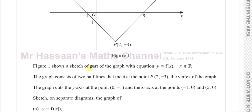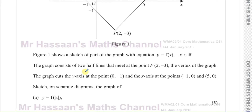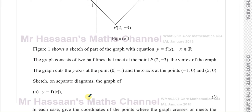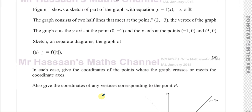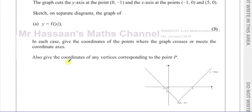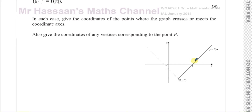Sketch on separate diagrams the graph of, first of all, y equals f of the modulus of x — here the modulus is inside the function. In each case, give the coordinates of the points where the graph crosses or meets the coordinate axes, and also give the coordinates of any vertices corresponding to the point P.